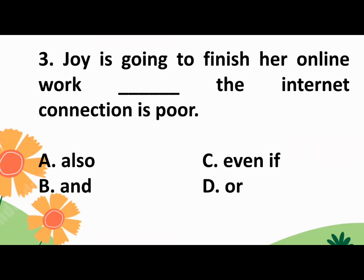Number 3: Joy is going to finish her online work blank the internet connection is poor. A. Also, B. And, C. Even if, or D. Or?